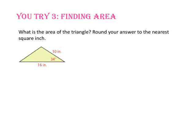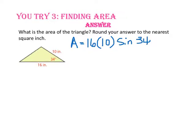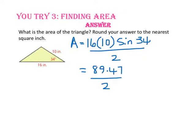Pause the video and do uTry number 3. What is the area of the triangle? Round your answer to the nearest square inch. Since we have side-angle-side, we multiply the lengths of the two sides by the sine of the included angle and divide by 2. That gives us about 89.47 divided by 2, so rounded to the nearest square inch, approximately 45 inches squared.